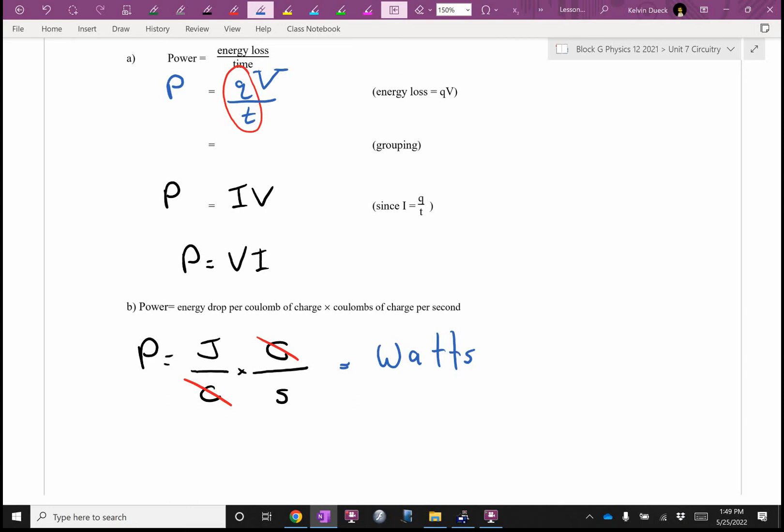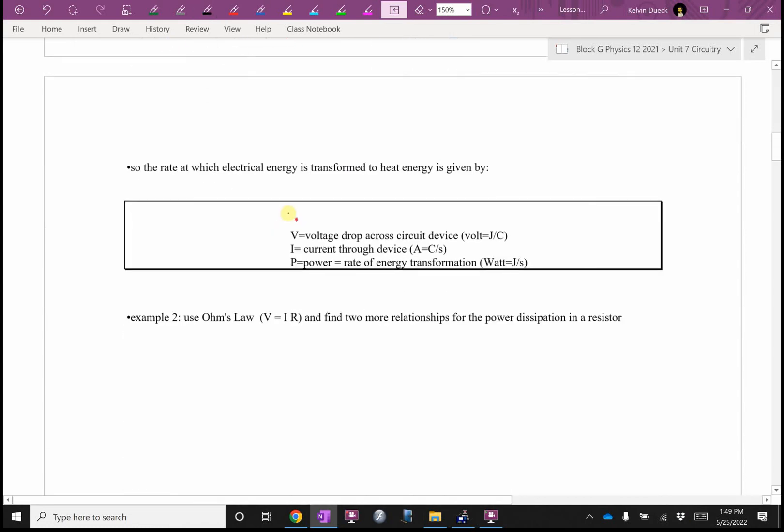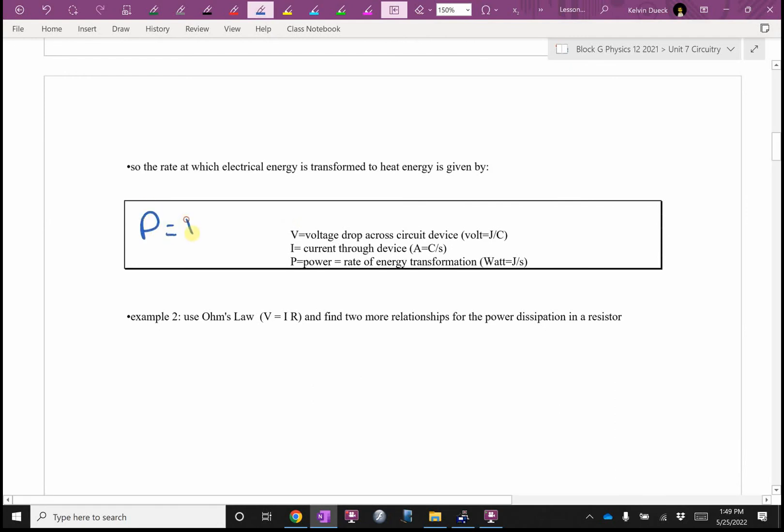So Joule's law says power equals V times I. In a circuit at any location there are four things: the voltage, the current, the power, and the resistance. If you know any two, you can find all four.